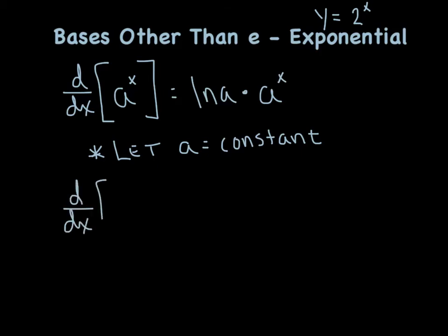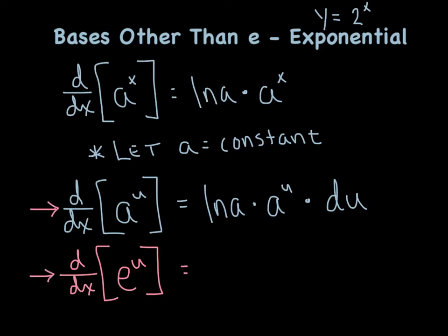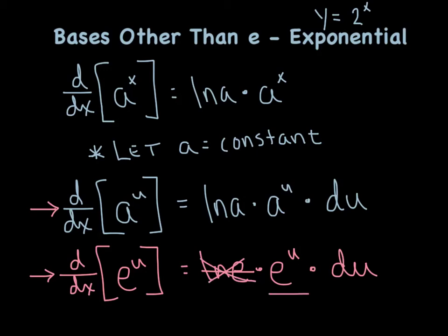More generally, if the exponent is more obnoxious and u represents a function of x, the derivative is still going to be the natural log of a times a to the u times the derivative of u. You're thinking your mind's ready to explode, but this really isn't any different than what we've been doing — it's the same rule you've been using for e to the u. Apply that same rule, because e is a constant. What you'll notice is the natural log of e — we didn't write it before because it equals 1. Other than that, it's the original rule we've been using. Here's our new rule for today.